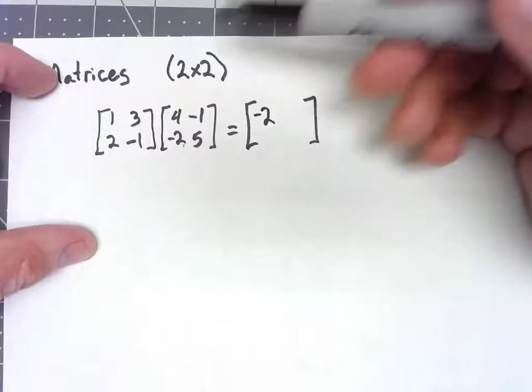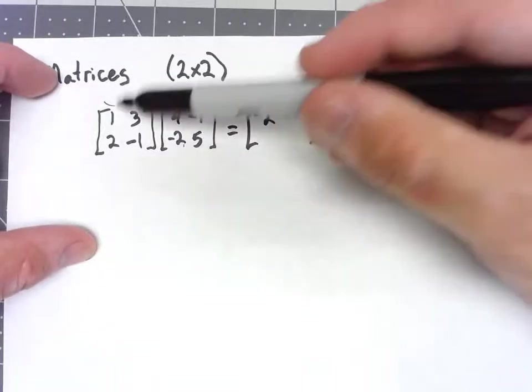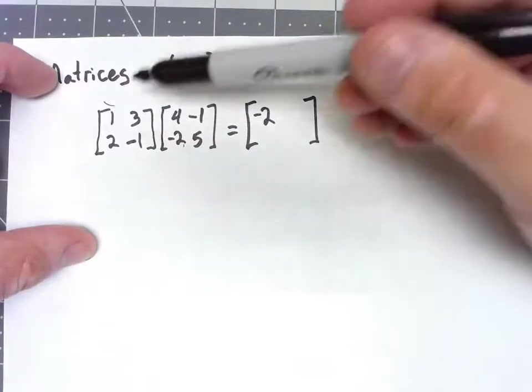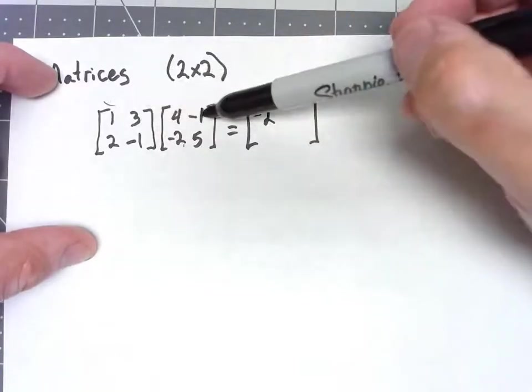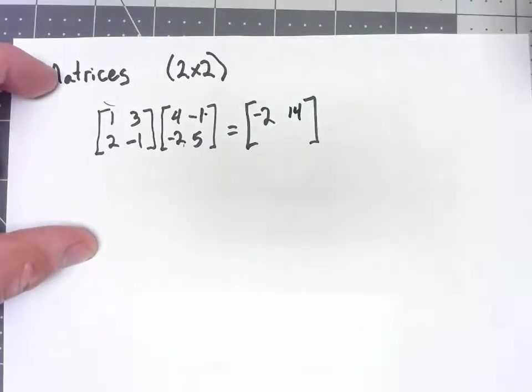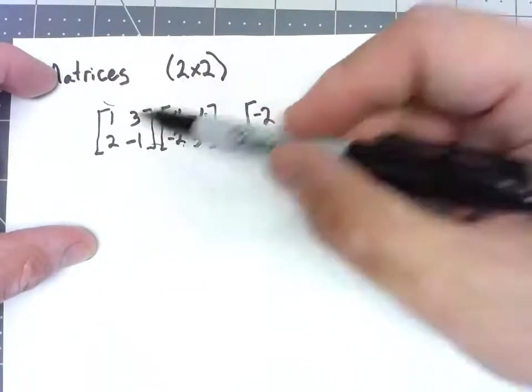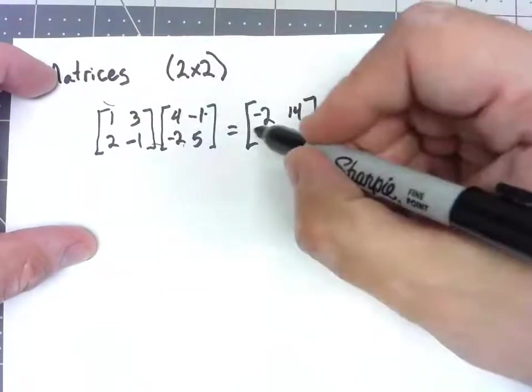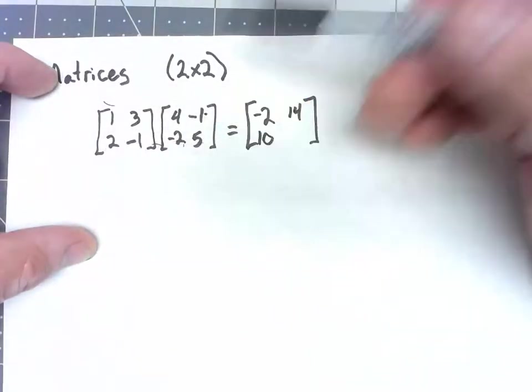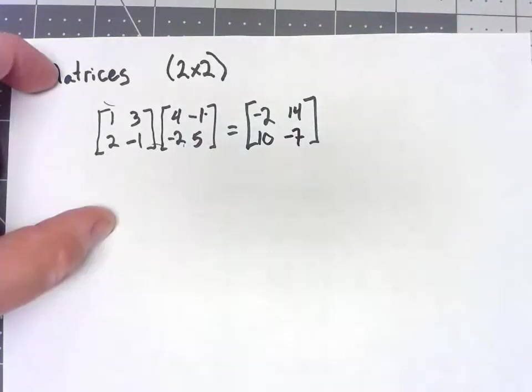For the top right, I take the top of the first matrix, the right part of the second matrix. Same thing, left to right, top to bottom, pair them up and then add. Negative 1 plus 15 gives me 14. Bottom left, I take the bottom and the left, 8 plus 2 gives me 10. Bottom right, negative 2 minus 5 is negative 7.